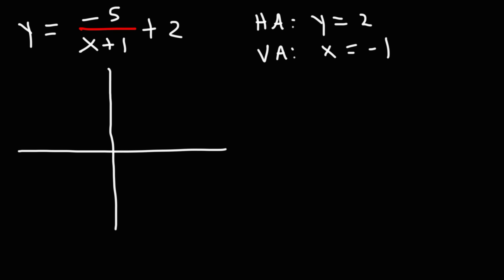For the vertical asymptote, we could set the denominator of the fraction equal to 0 and solve for x. This will give us our h value, which in this case is negative 1. So now let's go ahead and draw our rough sketch.